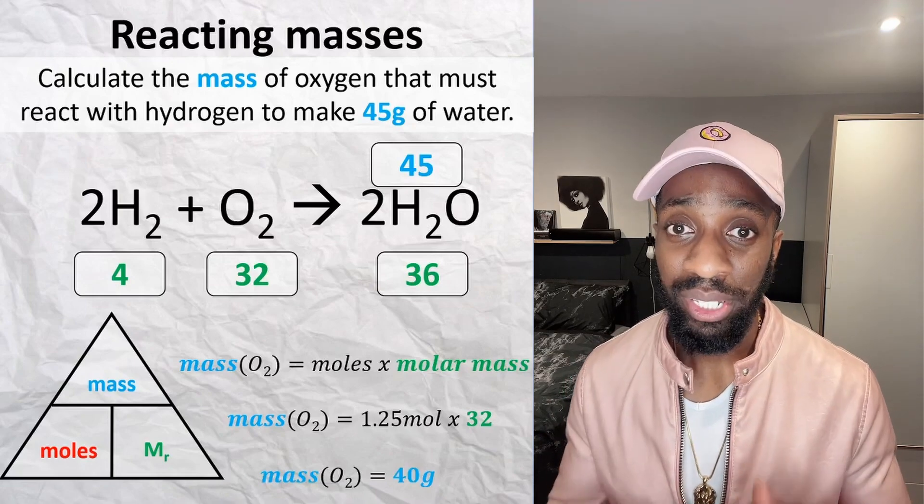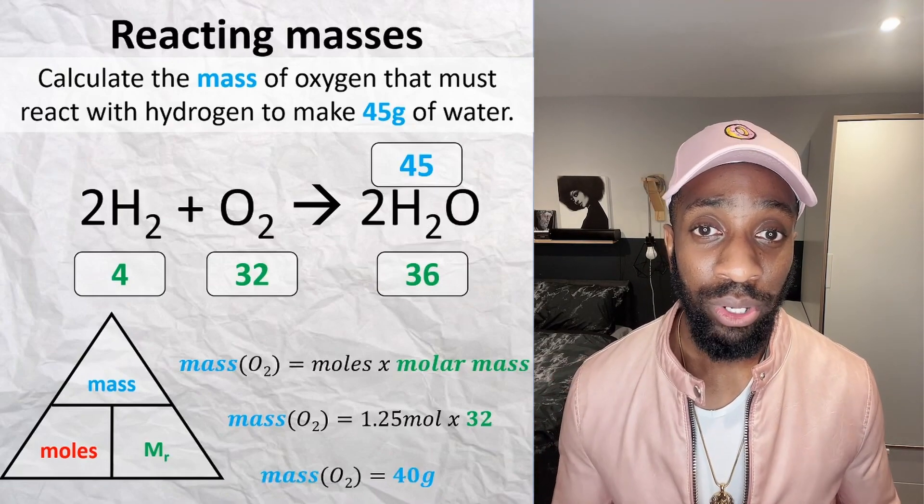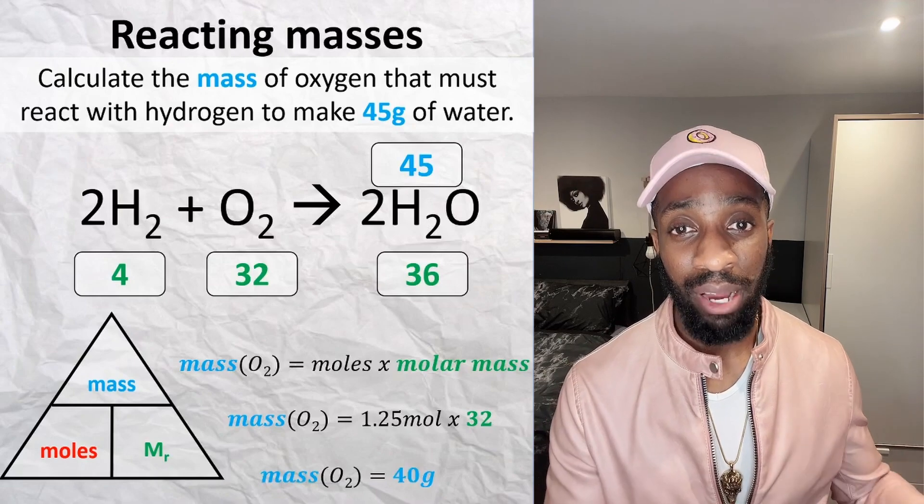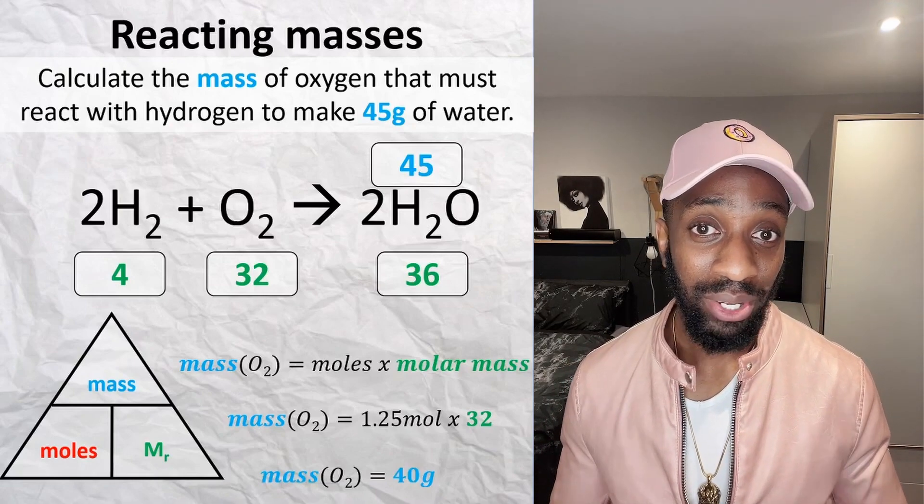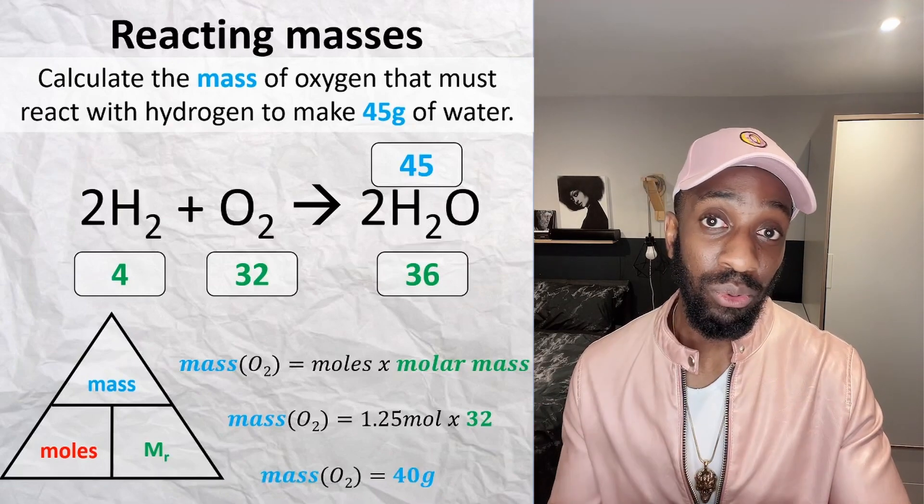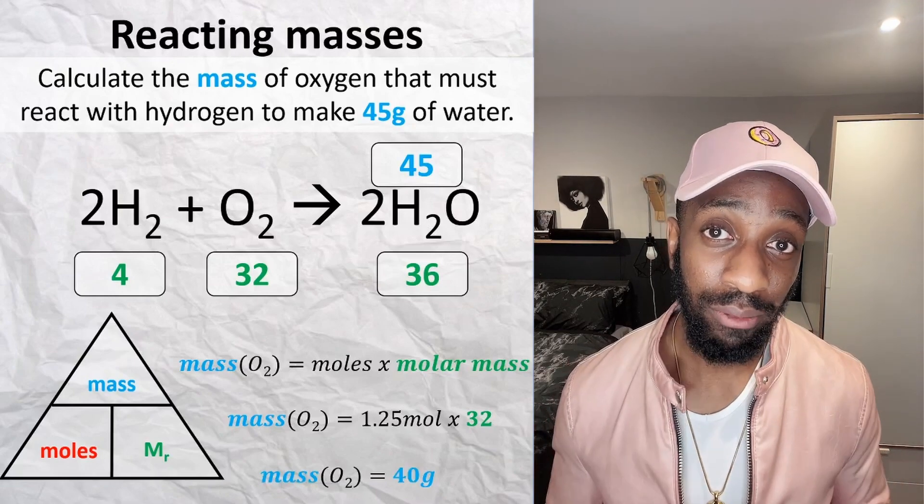Then when we multiply those together, we get 40 grams of oxygen. This means that we have to react 40 grams of oxygen in order to produce 45 grams of water. Hopefully you wrote all of that down, because now you're going to use that worked example to work out a calculation all by yourself.